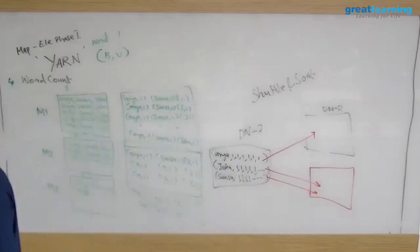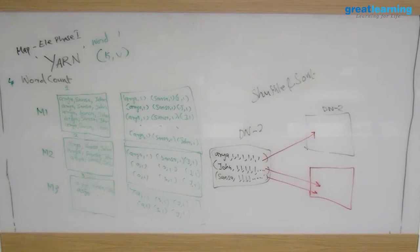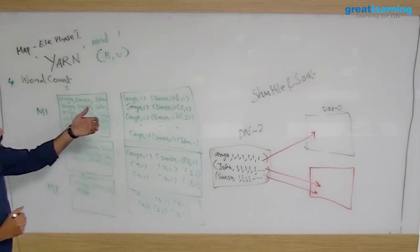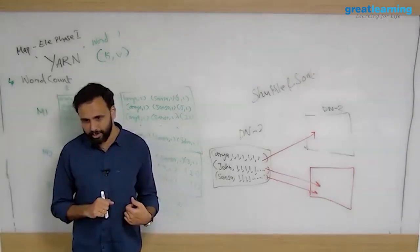Coming to a practical example — the ICICI Bank use case. I did not write MapReduce for them, but I saw one of the batch jobs they were running. They were using MapReduce. They had multiple branches and were collecting transaction data from each branch.